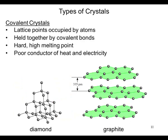Covalent crystals, the lattice points are occupied by atoms. Held together by covalent bonds, they are hard and have high melting points. They are poor conductors of heat and electricity. Notice the carbon atoms in the diamond and the graphite.